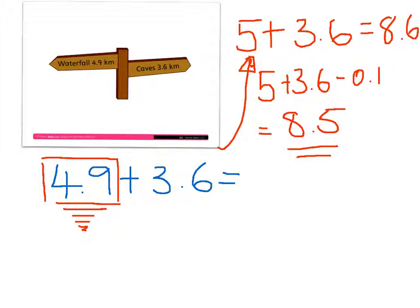So that is how I solved 4.9 plus 3.6. Let's go through those steps: I rounded 4.9 to 5. I took 5 and added 3.6 to it, which gave me 8.6. And then I went back and compensated for the change I made before, so I took 0.1 off. And in total, that gave me 8.5. Thank you.